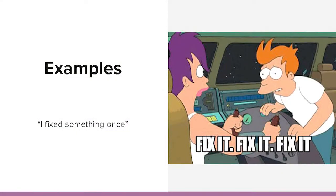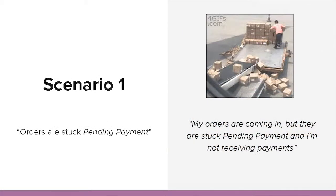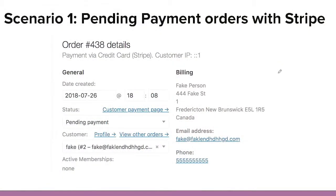Now probably the most important part — the examples section, because I fixed something once. These are actual things I fixed at my job in support, where every day I get emails from people saying something is broken. The first scenario: orders are stuck in pending payment. I took a look at the specific order they indicated — I always ask for an example order so I know where to look. I opened the billing information and noticed the payment method was Stripe, but the transaction ID was missing. That's why the payment didn't go through — something happened and it didn't reach Stripe.